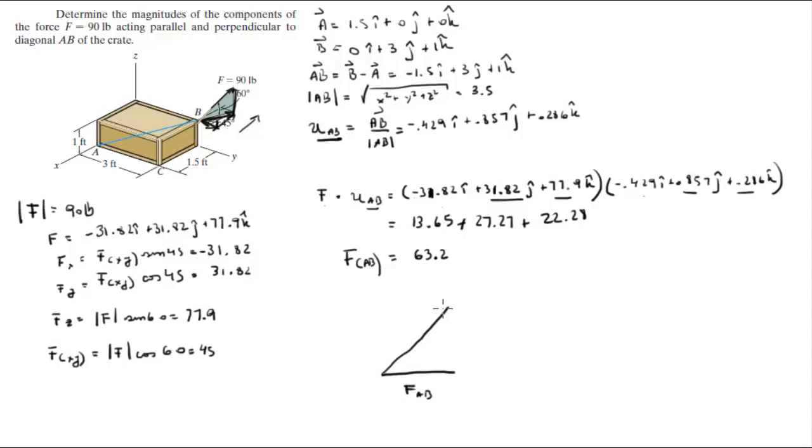This is F, so this is F perpendicular to AB, which is the one we're missing. F along AB comes out to be 63.2, F is 90, so you can find this force by using the Pythagorean theorem, which says that F perpendicular to AB squared plus F along AB squared is equal to F squared.